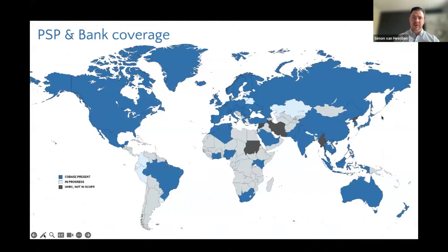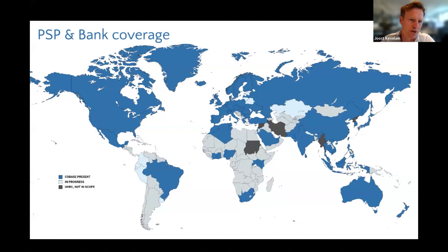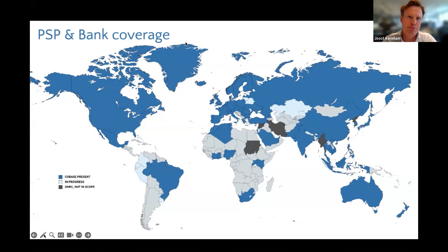Cobase services customers across the globe and is connected to banks in more than 80 countries. PSPs across those countries are also connected to the Cobase platform, making data from both banks and PSPs globally available to your single NetSuite instance.